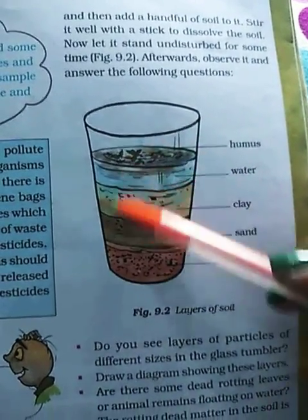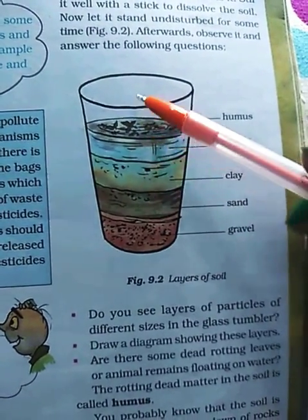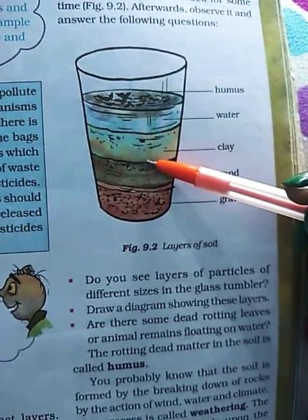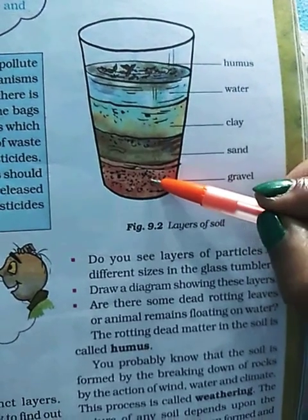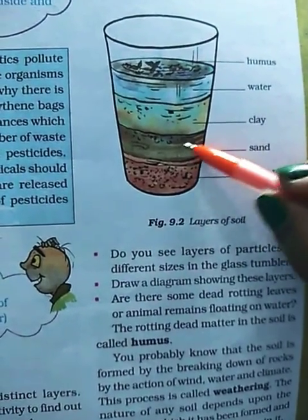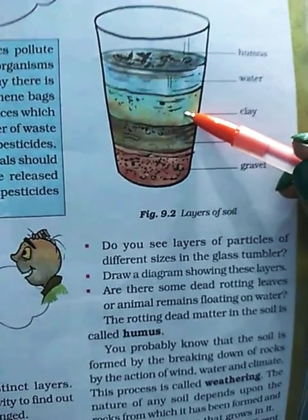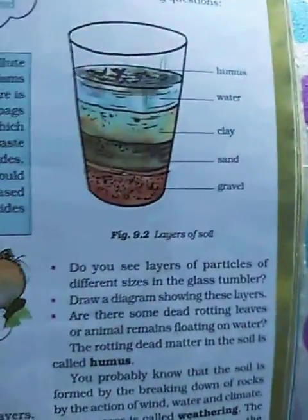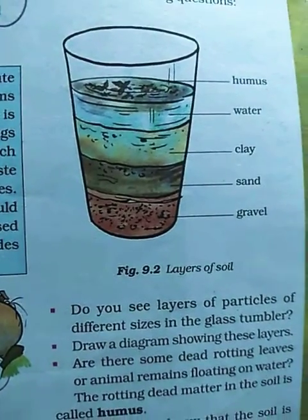After some time, you will observe that the soil has been distinguished into different layers according to the size of the particles. At the bottom of the tumbler, the heaviest particles — that is the gravels (small stones) — settle down. Above the gravel are sand particles, which are less heavy than the gravels. Above the sand particles is a mixture of clay, the fine particles of soil. Above the clay is muddy water created due to the mixture of water and soil. And on the top surface of the water, you will see some dead, rotten plant materials floating.